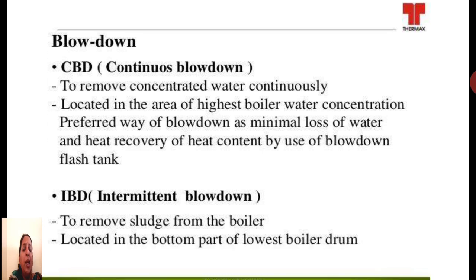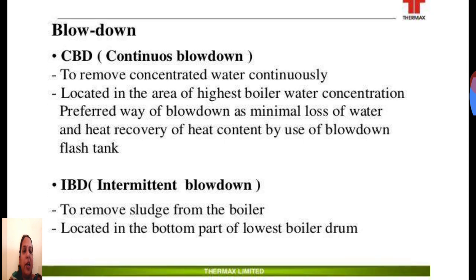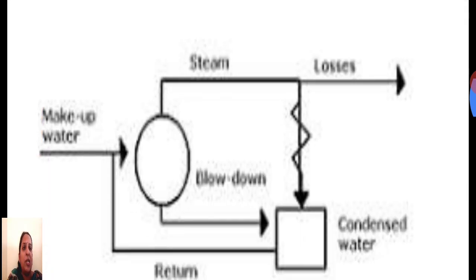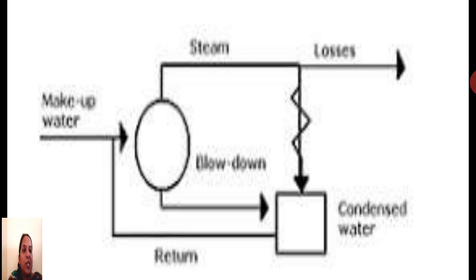In continuous blowdown, concentrated water is continuously removed from the boilers. It is located in the area of highest boiler water concentration and is the preferred method because of minimal loss of water and heat, with recovery of heat content by use of a blowdown flash tank. In intermittent blowdown, the waste water or sludge is removed intermittently from the boiler, preferably located at the bottom of the lowest boiler drum. The return water from the condensate along with makeup water forms the feed water; a portion of the waste water is discharged to the drains or recycled.